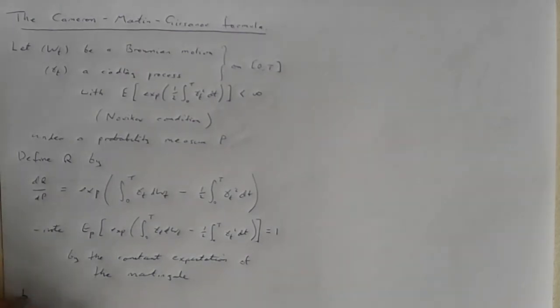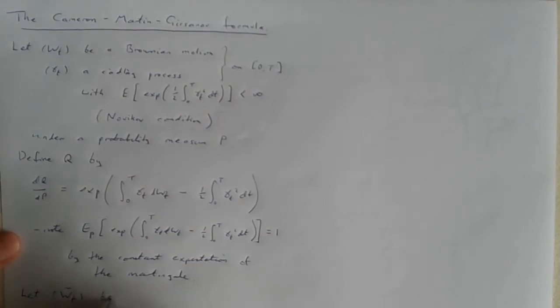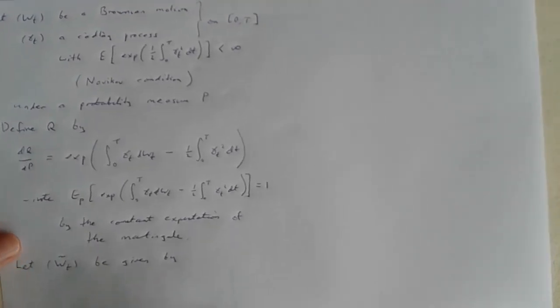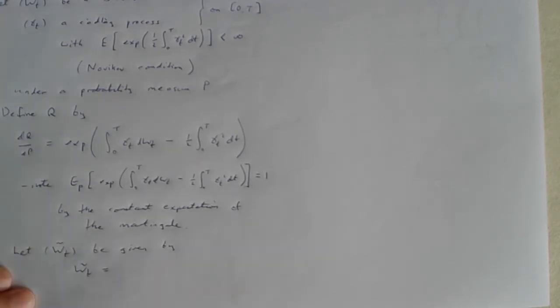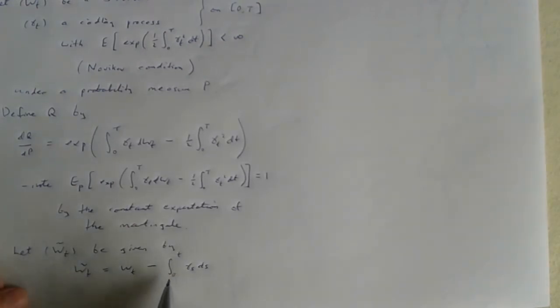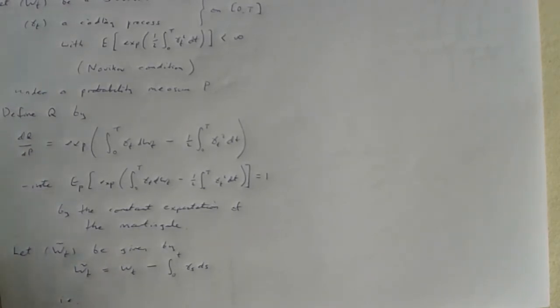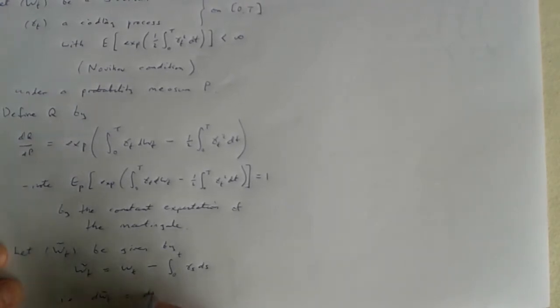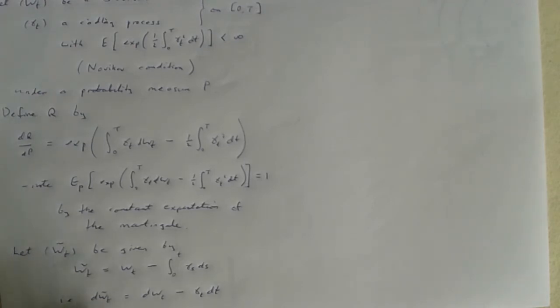To explain that, I need to introduce a new process W̃_t. W̃_t is the same as W but with a little adjustment: the anti-derivative of gamma is subtracted. In differential form: dW̃_t = dW_t minus gamma_t dt. So W̃_t is an Itô diffusion whose speed is one and whose drift is minus gamma_t.